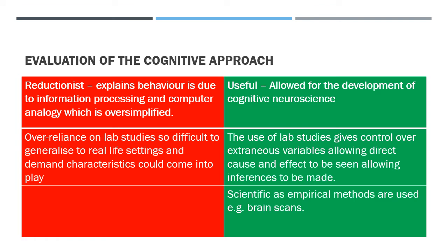Evaluating the cognitive approach: negatives include that it is reductionist — explaining behaviour through information processing and the computer analogy oversimplifies things and doesn't consider that humans have emotions which may change their output, reducing validity. Over-reliance on lab studies for researching memory and attention may also reduce ecological validity. Positives include that it is quite useful, having allowed for the development of cognitive neuroscience. Lab studies allow direct cause-and-effect relationships and inferences to be made accurately. Empirical methods such as direct observation make it highly scientific.